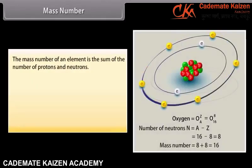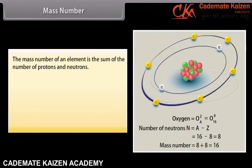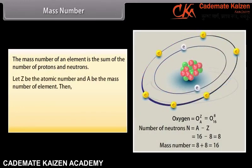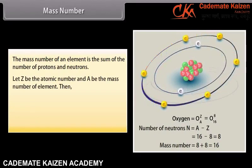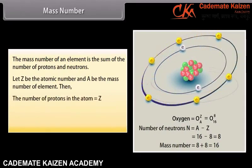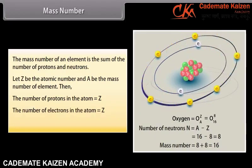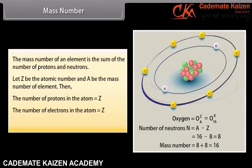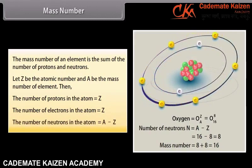Mass Number. The mass number of an element is the sum of the number of protons and neutrons. Let Z be the atomic number and A be the mass number of an element. Then the number of protons in the atom equals Z, the number of electrons equals Z, and the number of neutrons equals A minus Z.